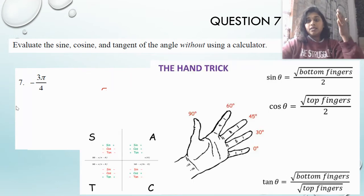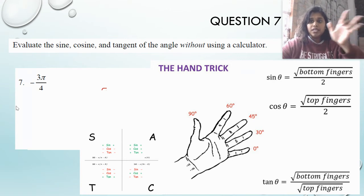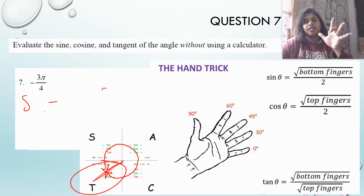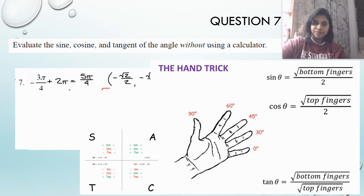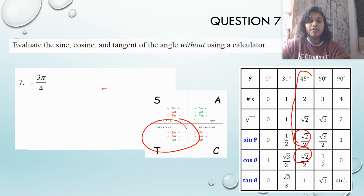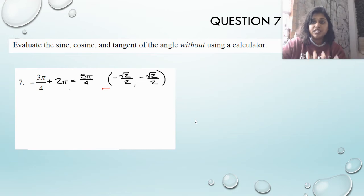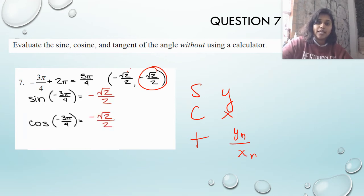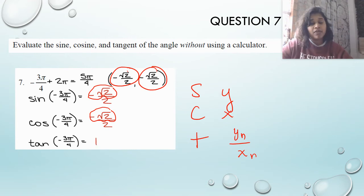We end up with negative square root of 2 over 2, negative square root of 2 over 2. For the hand trick, I'm dealing with pi over 4, so that middle value. Cosine is the top — square root of 2 over 2. Sine is the bottom — square root of 2 over 2. I reference ASTCA: negative 3 pi over 4 — or in standard position, 5 pi over 4 — is in quadrant 3, so sine is negative, cosine is negative, and tangent must be positive. For the chart trick, one more time dealing with pi over 4: here's my sine, here's my cosine, and I just need to know I'm in the third quadrant. Finishing the solve: sine is the y value, cosine is the x value, and tangent is negative square root of 2 over negative square root of 2 — a negative over a negative is still positive.